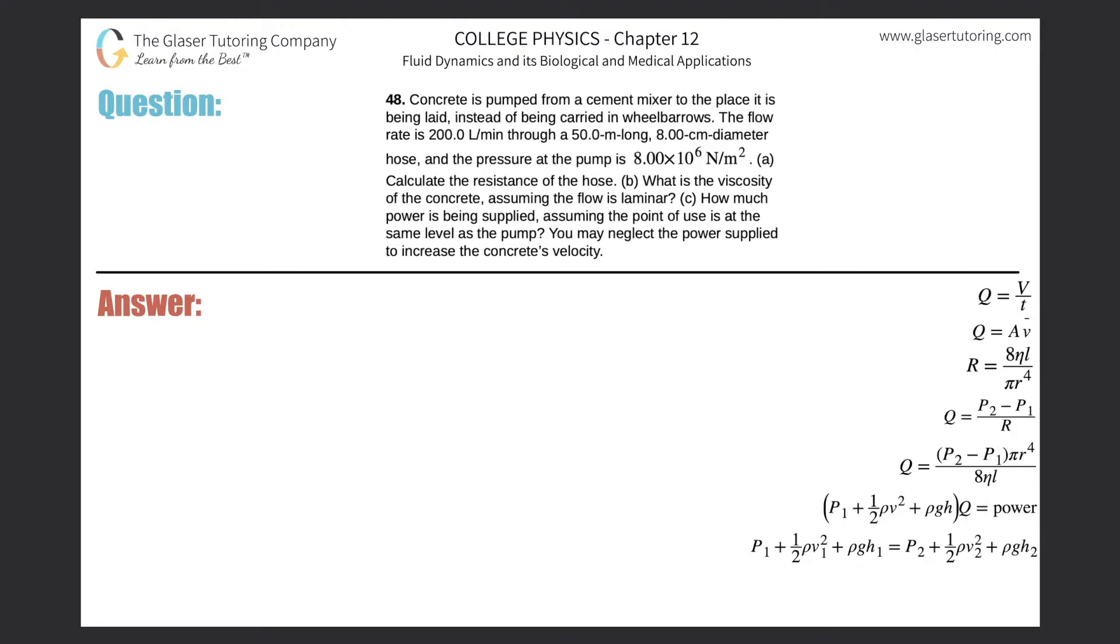Number 48: Concrete is pumped from a cement mixer to the place it is being laid instead of being carried in wheelbarrows. The flow rate is 200 liters per minute through a 50-meter long, 8-centimeter diameter hose, and the pressure at the pump is 8×10⁶ newtons per square meter. Letter a: Calculate the resistance of the hose.